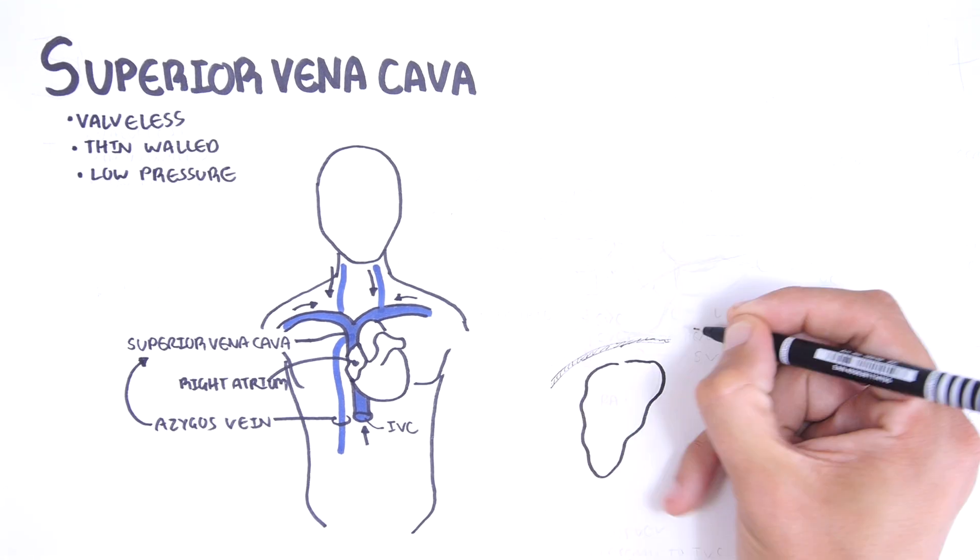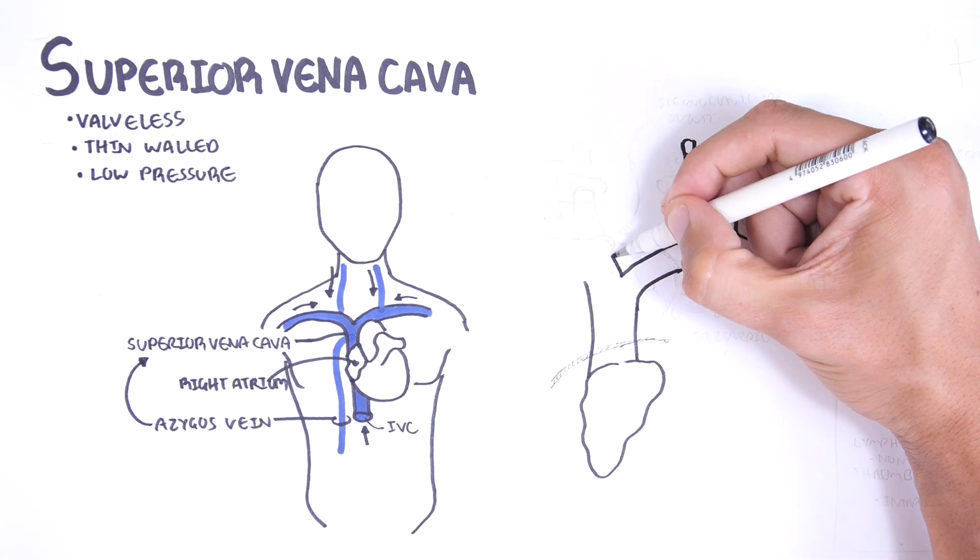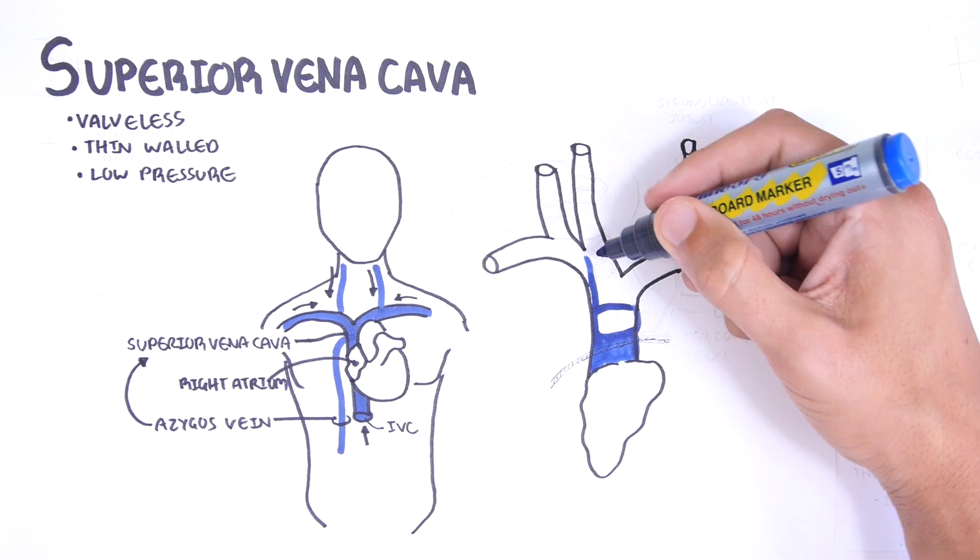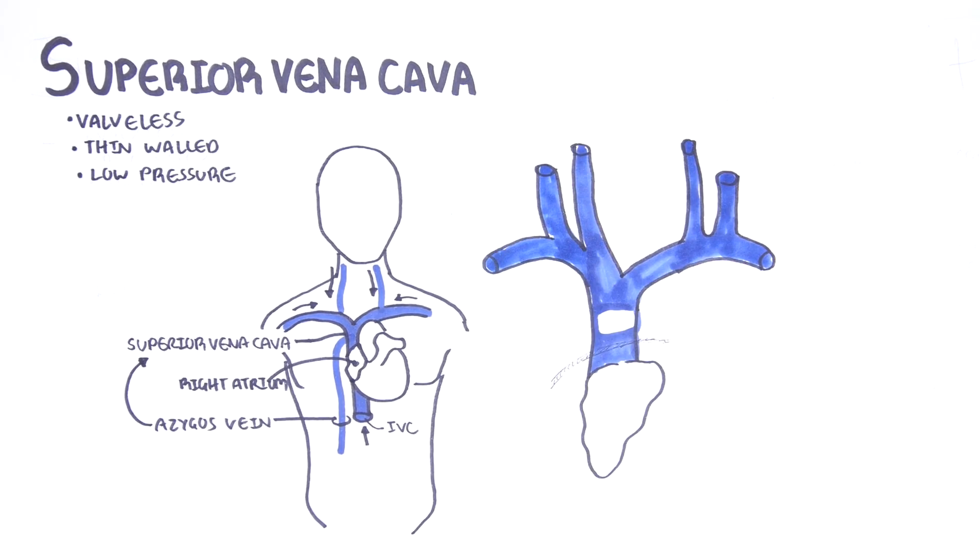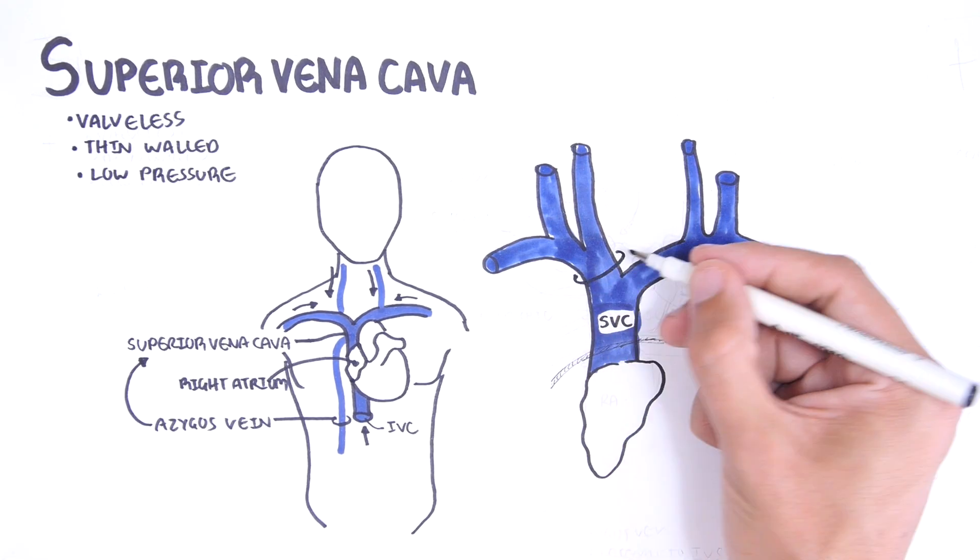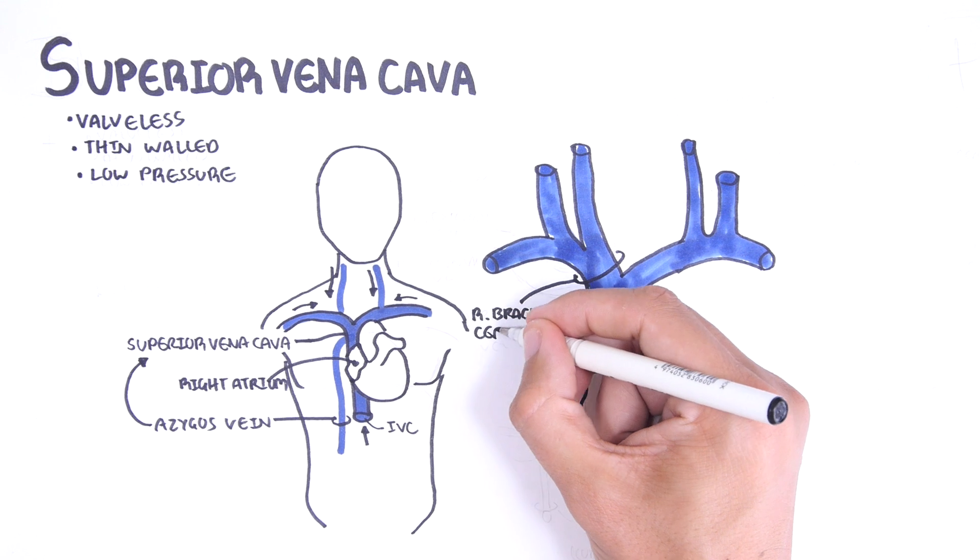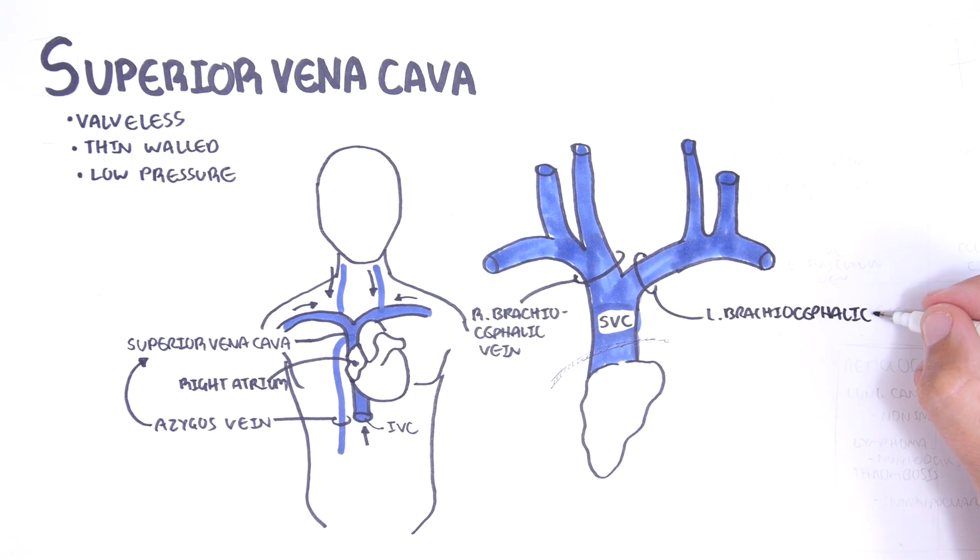Taking a closer look at this area, the superior vena cava have three main tributaries. The first is the right and left brachiocephalic veins which drain into and form the superior vena cava.